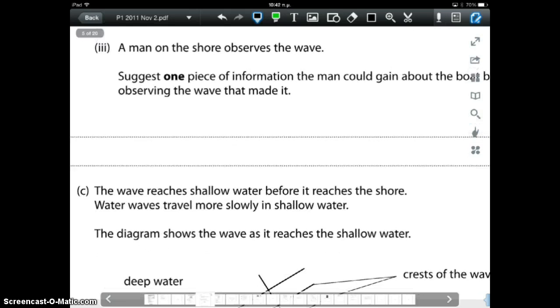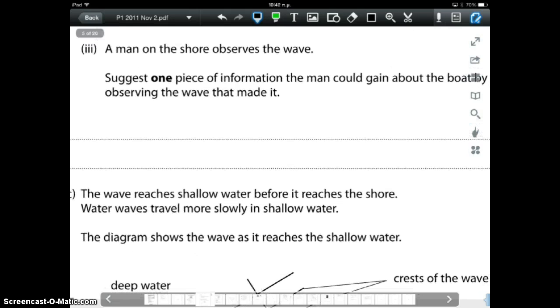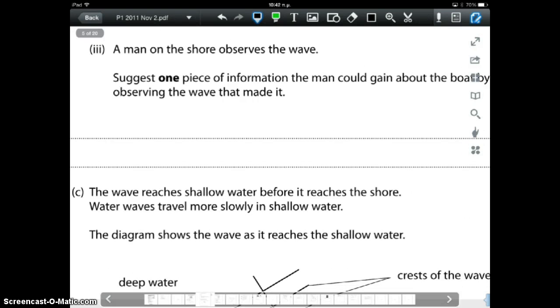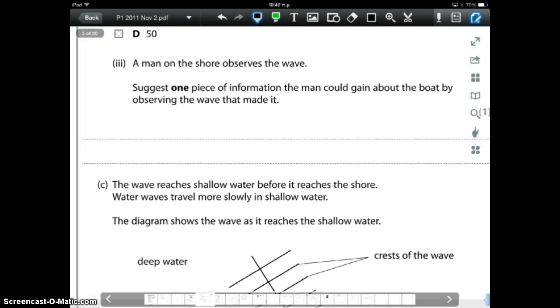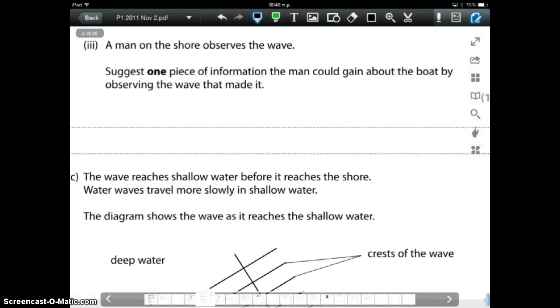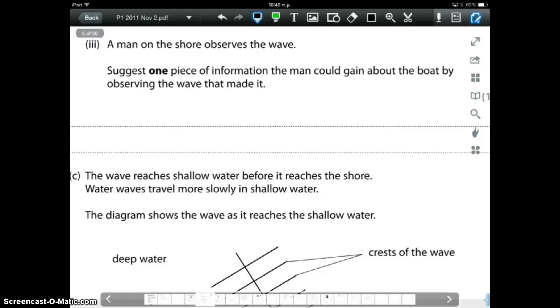Part 3. B3. A man on the shore observes the wave. Suggest one piece of information a man could gain about the boat by observing the wave that made it.